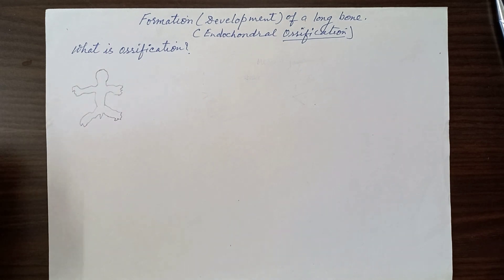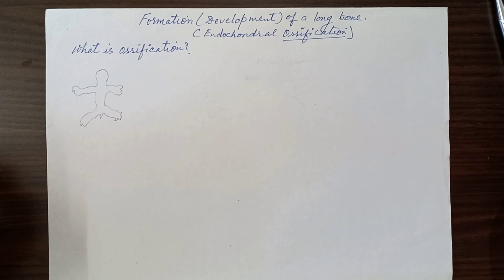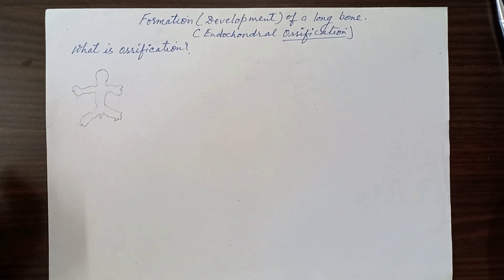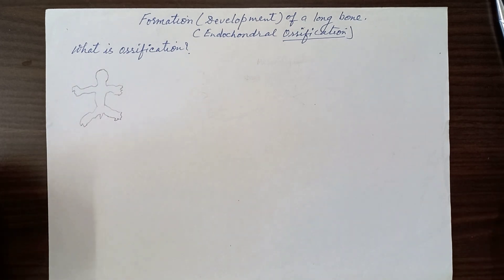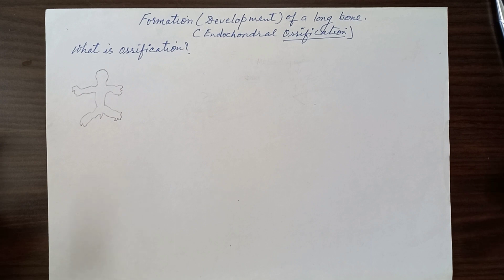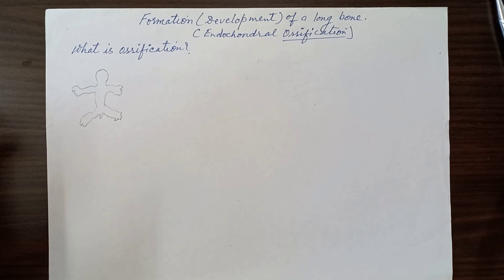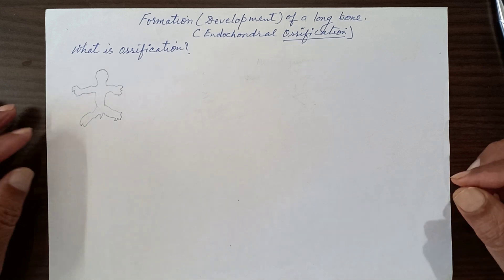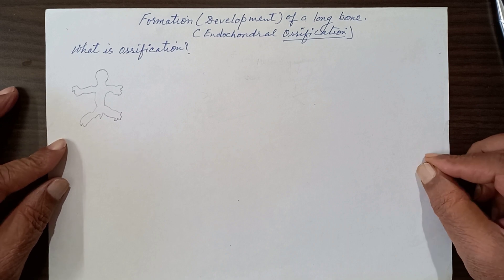Bone formation takes place quite early in the embryonic life or the beginning of fetal life. The intrauterine life inside the womb of the mother, from fertilization till the completion of the first eight weeks of intrauterine life, is called the embryo. After this, from the third month or ninth week till birth, it is called the fetus. Most long bones start their ossification by the seventh or eighth week of intrauterine life.